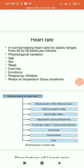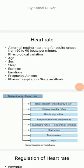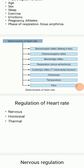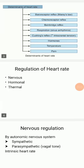Now we will see the determinants of heart rate. Heart rate is determined by the baroreceptor reflex, chemoreceptor reflex, Bainbridge reflex, duration of respiration, Cushing's reflex, and it changes with different hormones, different temperature, and in the condition of pain. Heart rate is regulated by three mechanisms: nervous, hormonal, and chemical regulation.